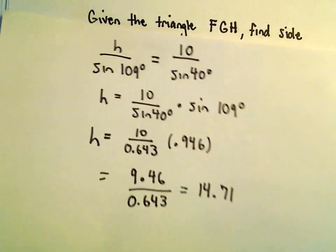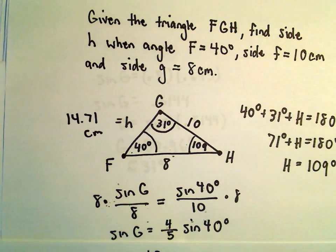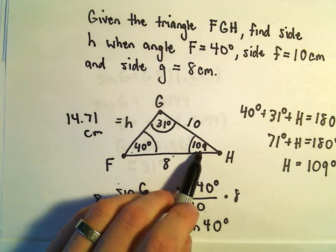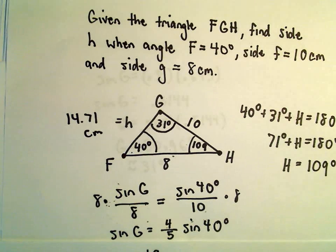So again, it's just a bunch of repeated uses here of the law of sines to figure out first the angle that's missing, and then we could use that to figure out the length of the side that we were missing.